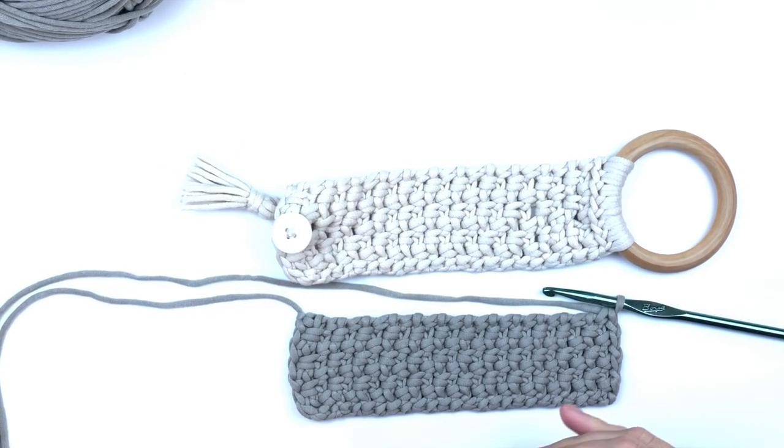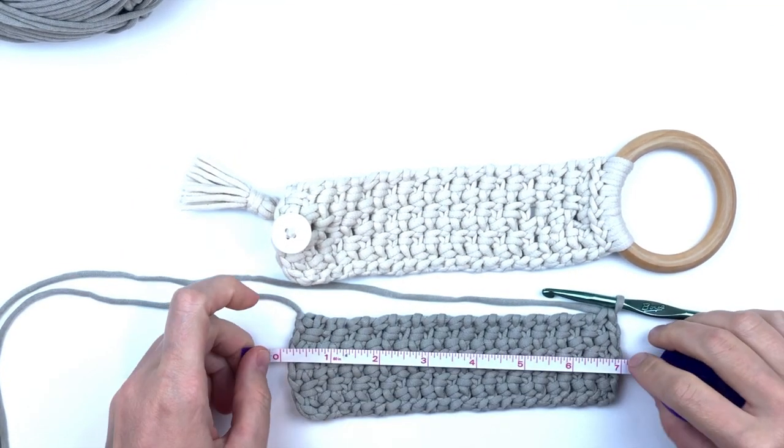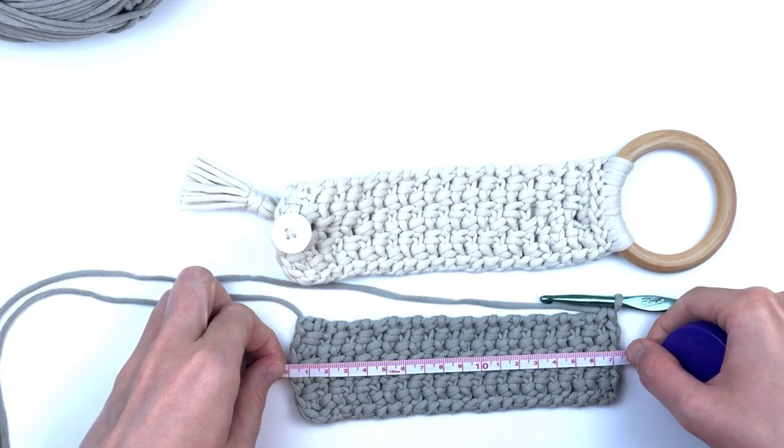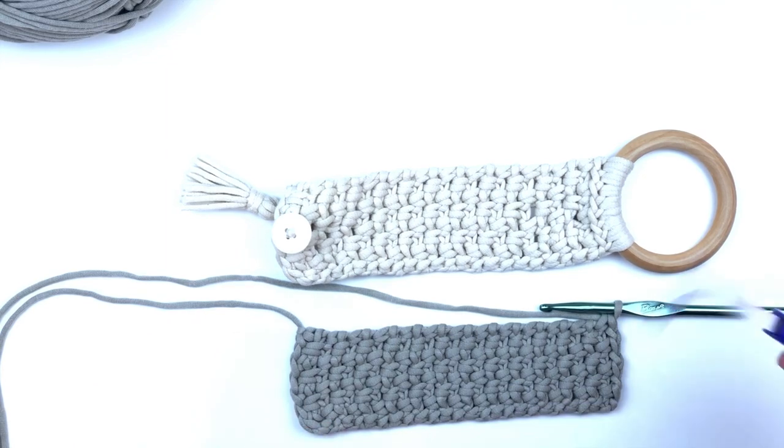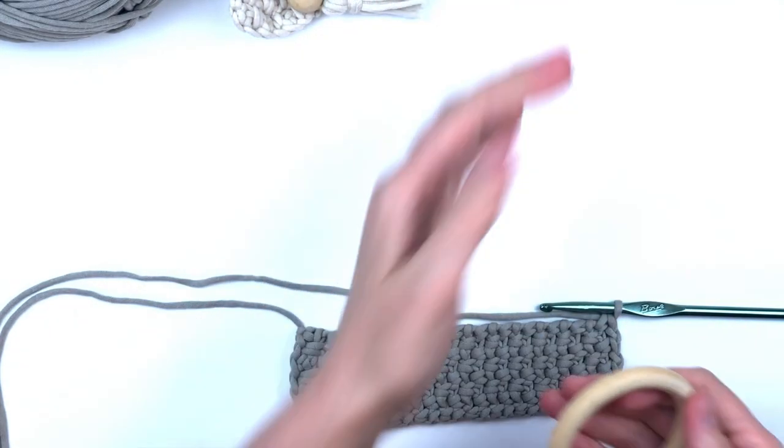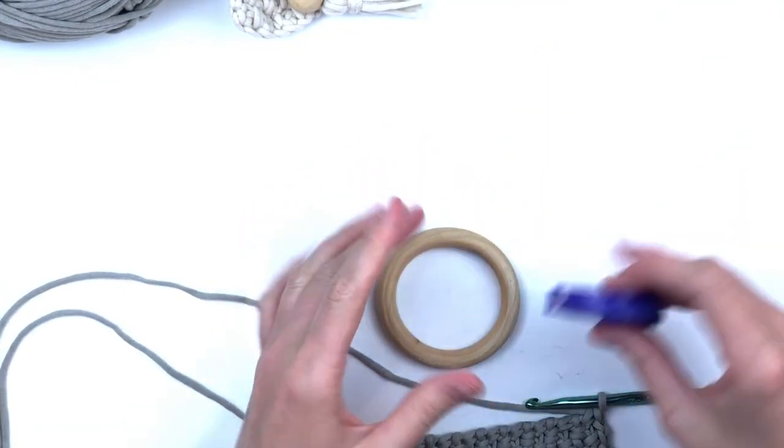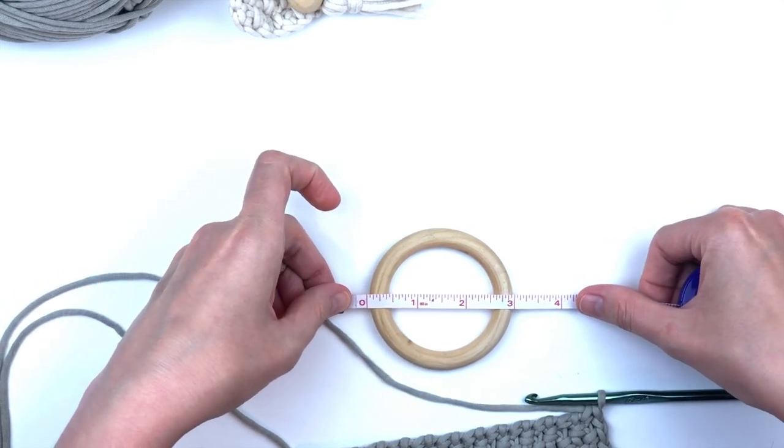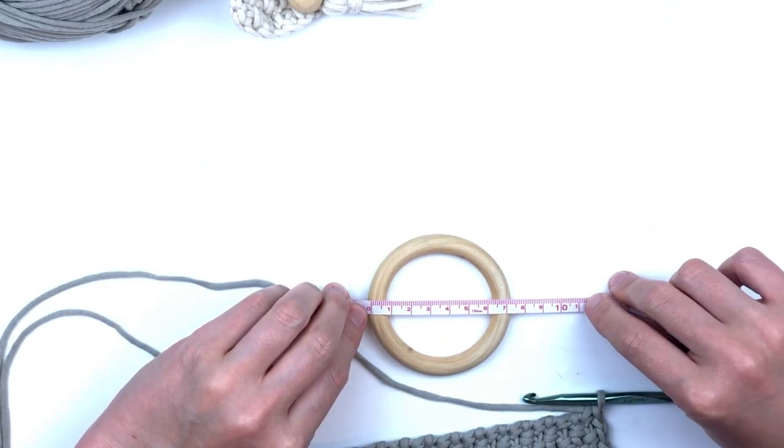Okay, so as you can see my piece is now seven inches and it looks about the same as the other one that I have already made. This is where I will add the wooden ring. I got these rings from Hobby Lobby and I will measure them so that you know about what size to buy if you choose to buy them elsewhere. They're about three inches or about seven centimeters.